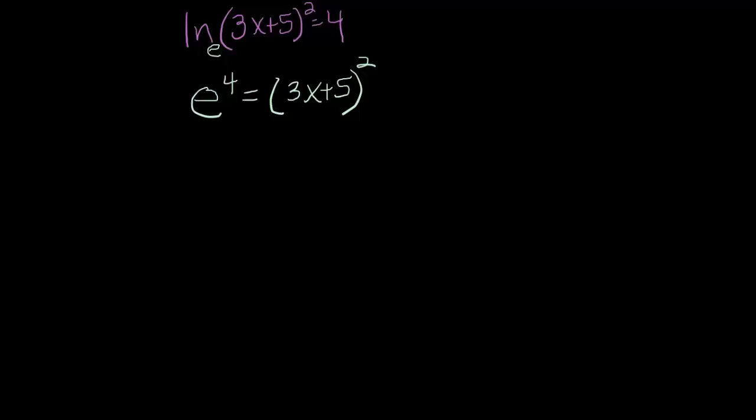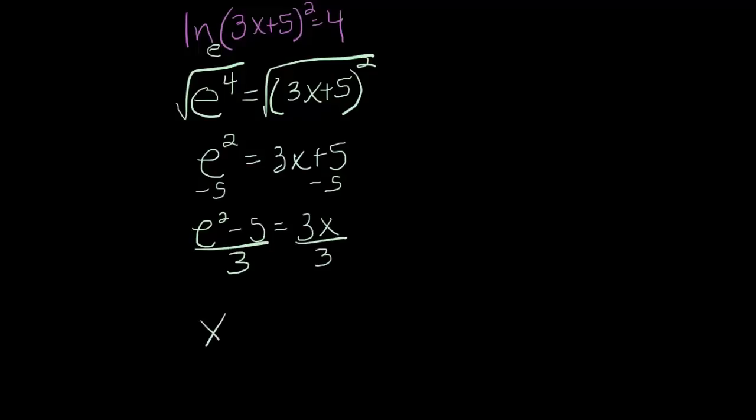So how do I solve for x right now? Well, the first thing I'd want to do is get rid of this square over here on the right side. So I'm going to square root everything. That would leave me with e squared equals 3x plus 5. Now to get x by itself, I'm going to subtract 5 from both sides. So I have e squared minus 5 equals 3x. And now divide by 3 on both sides. So my final answer for x is e squared minus 5 over 3.